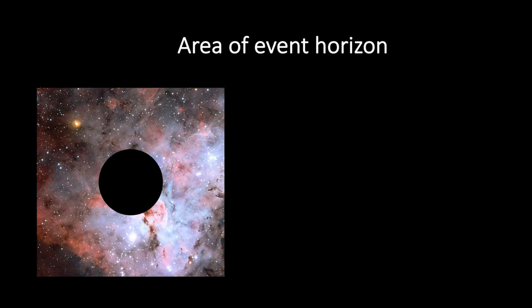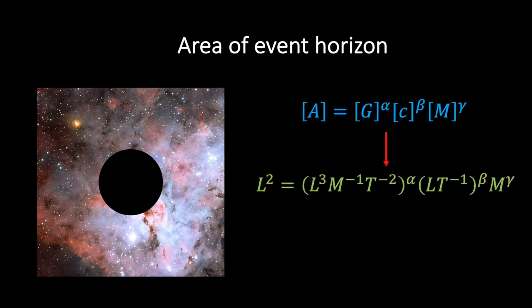To fix alpha, beta, and gamma, we simply need to match the dimensions on either side of this expression. The left-hand side represents an area which has dimensions of length squared. For the right-hand side, we need to insert the dimensions of G and c that we calculated earlier. If we do that, then we find the following green expression.